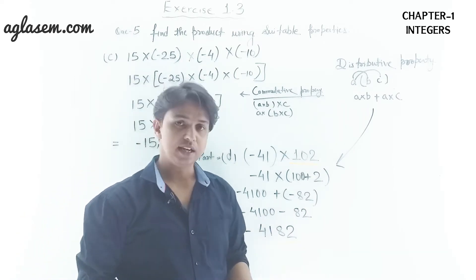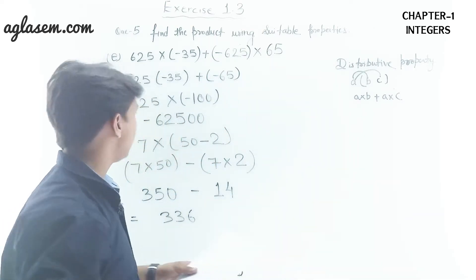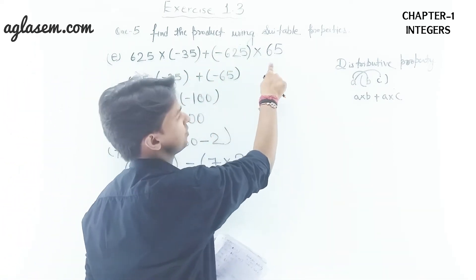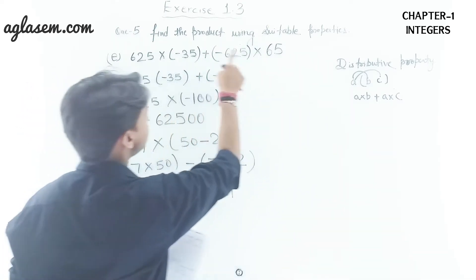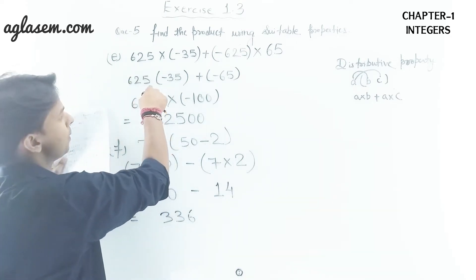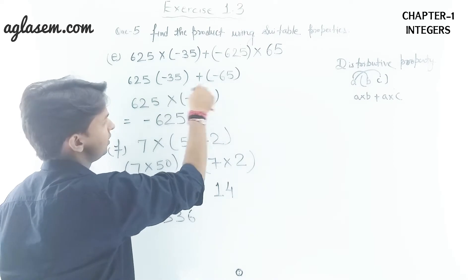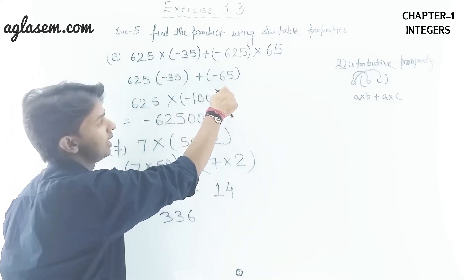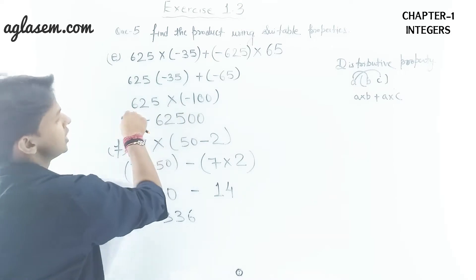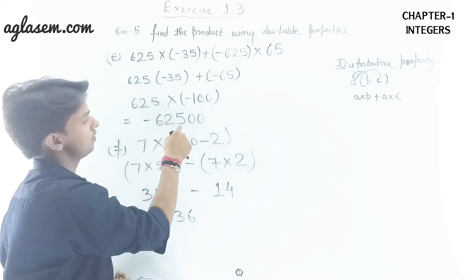Part e: 625 × (−35) + (−625) × 65. Using the distributive property, we take 625 common: 625 × [(−35) + (−65)]. Solving the bracket: −35 + (−65) = −100. Then 625 × (−100) = −62,500. This is the product for Part e.